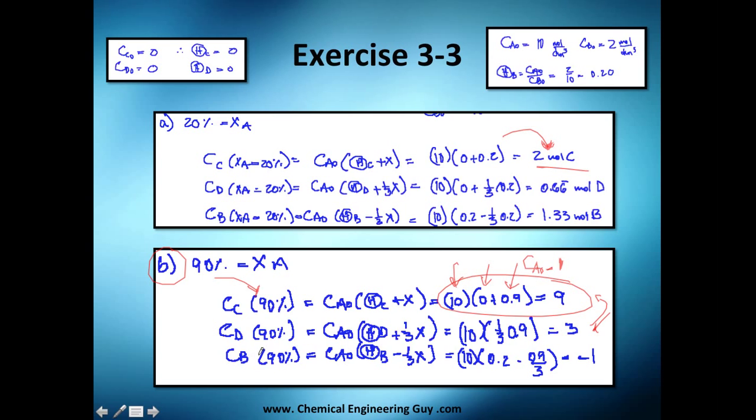One tricky part here is this concentration B. You're going to get this negative 1. And probably you know you cannot have negative concentration. So this, either you got a mathematical error or you are achieving a conversion that you cannot achieve because you do not have enough material. And this is the case because you only have 0.2 moles of B, and to get 90%, you will need to have at least 0.3 moles of B.